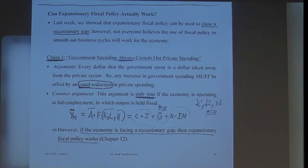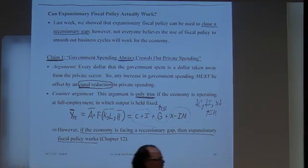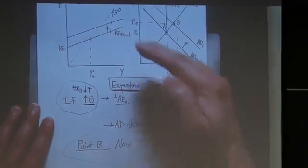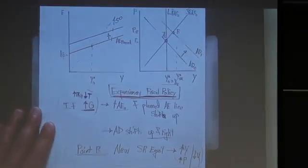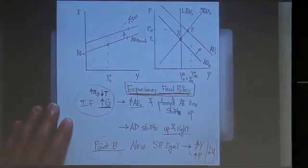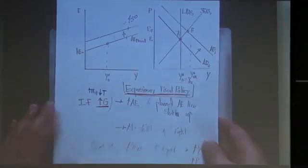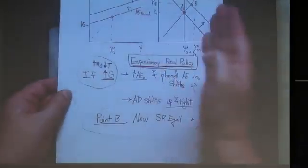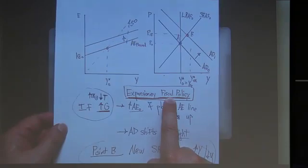If the economy has a recessionary gap, expansionary fiscal policy actually does work. The crowding-out claim is only true in a very particular environment — long-run equilibrium. In the picture drawn earlier starting in long-run equilibrium, increasing G expanded the economy under the assumption that this claim is not true and that fiscal policy can force the economy away from long-run equilibrium.